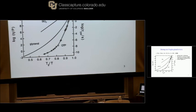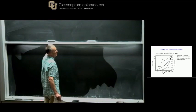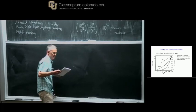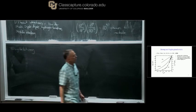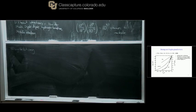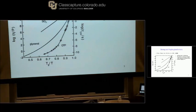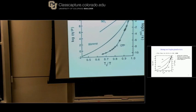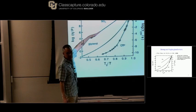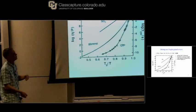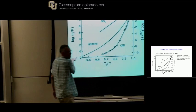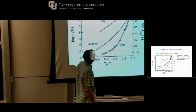Gilles introduced the fragile-strong classification. To decide whether something's fragile or strong, you make the Angell plot: you plot log of viscosity or log of a relaxation time versus inverse temperature normalized to TG. Pretty much any system that's been studied falls somewhere between SiO2, which shows an Arrhenius temperature dependence, and ortho-terphenyl, giving you a feeling for how curved this behavior can be. There are actually systems that are considerably more extreme — coming down even faster and bending down even more.